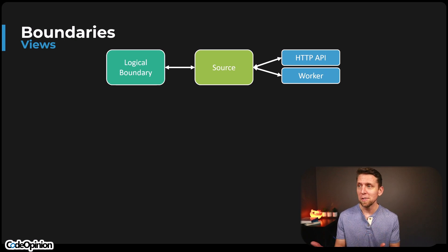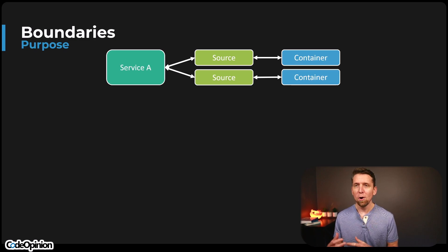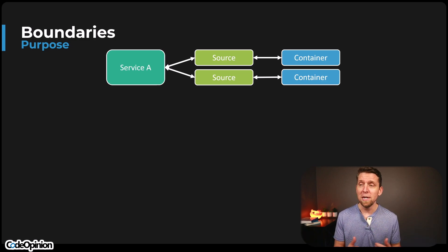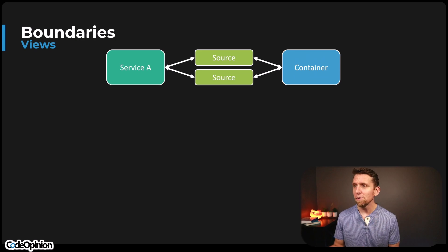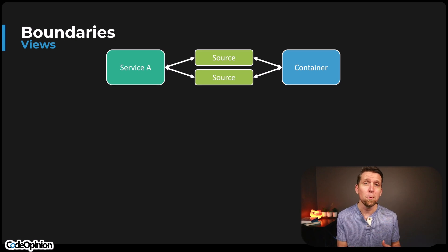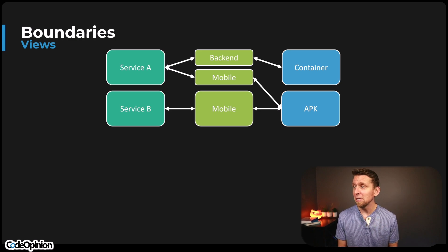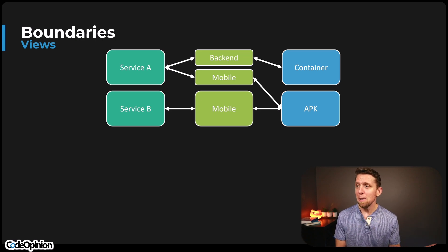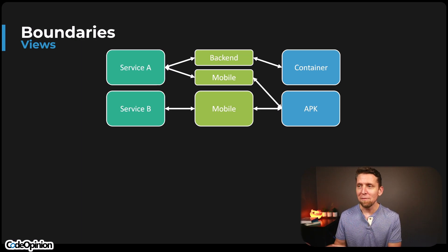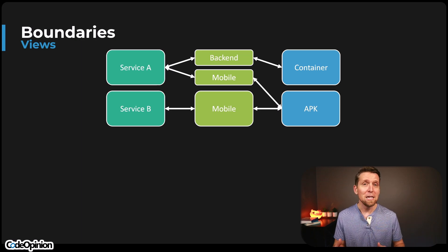We started with a logical boundary in the same source repository and turned it into two different entry points — the HTTP API and the worker. We could keep going: our logical boundary could have two different source repositories — maybe one's a front end and one's a backend — deployed independently into separate containers. Or multiple source repositories that during the build process turn into a single container, maybe a single process or multiple processes within that container. The best example is you have different services — maybe a backend and a mobile aspect — where the backend turns into a container but your mobile app is composed of different things, like an Android APK. The logical boundary, how you compose it in source code, and how it gets physically deployed is really just a big mix and match.